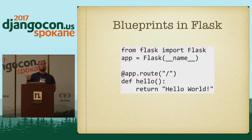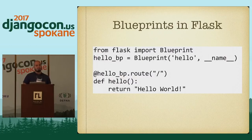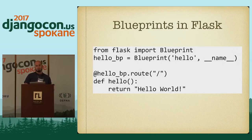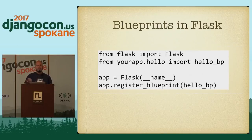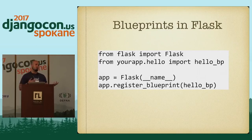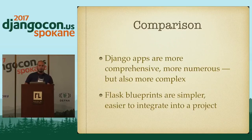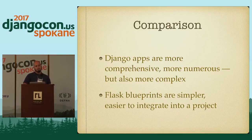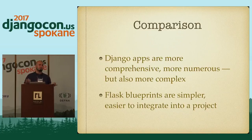Let me go back to our basic Hello World and transform it into a Blueprint. The only things I had to change were turning the app variable into a Blueprint variable — I can still use the same basic route decorator on top. Once I have this hello_bp Blueprint, I can attach it to an existing application by importing it and calling app.register_blueprint. This makes it much easier to take a monolithic application and separate it into several Blueprints, similar to what you'd do with Django apps. To compare: Django apps are more comprehensive with more of them available on Django Packages, but they're also more complex. Flask Blueprints are simpler and easier to integrate, but may not provide as much power.